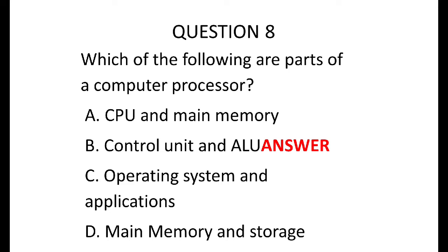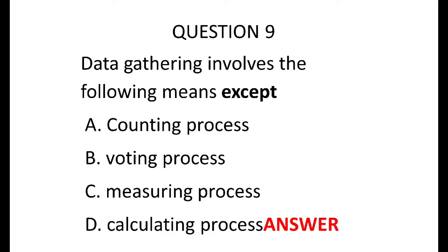Number eight says: which of the following are parts of a computer processor? The answer is the control unit and ALU, because the CPU, which is the computer processor, consists of the control unit, the ALU which is the arithmetic and logic unit, and the register. So option A is not correct and the others are not correct.